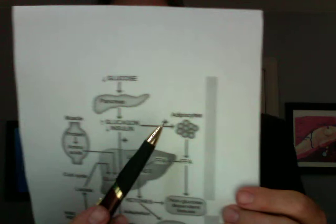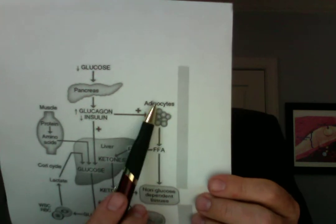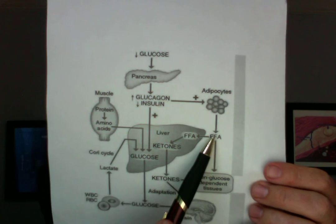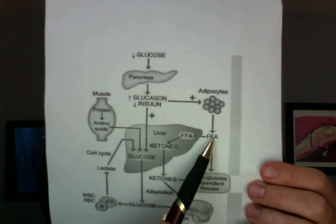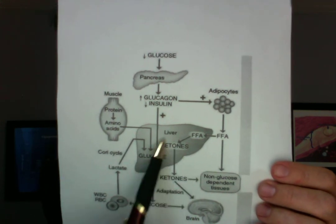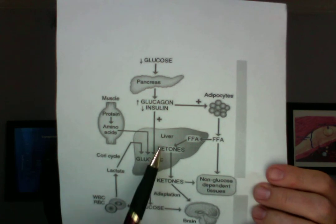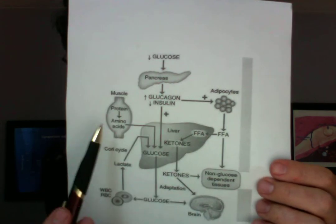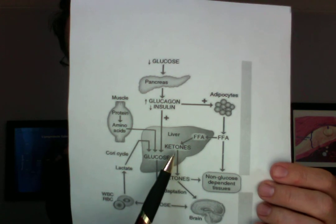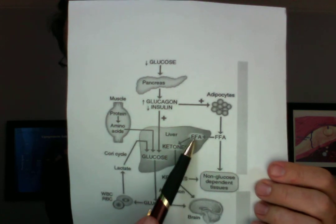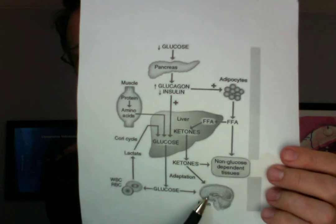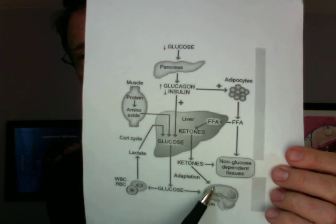Fat cells — adipocytes, adipose meaning fat — release free fatty acids. The free fatty acids are turned into ketones by the liver. Other cells or tissues of the body cannot create ketones from free fatty acids. Ketones are then used by the brain and other tissues for fuel.